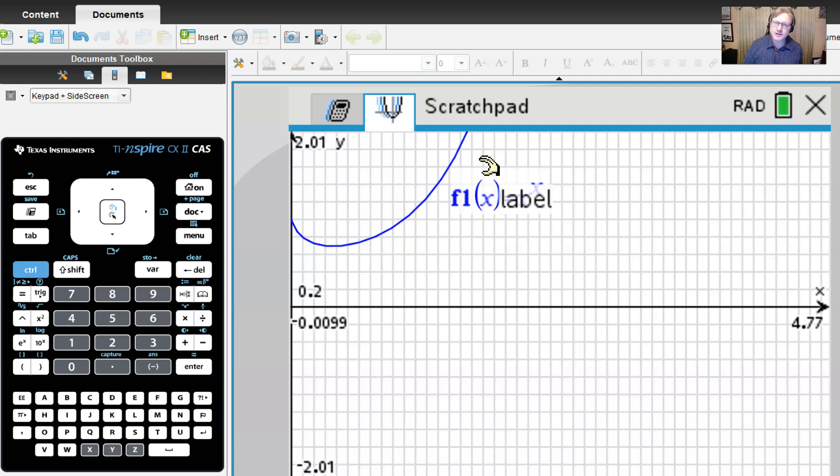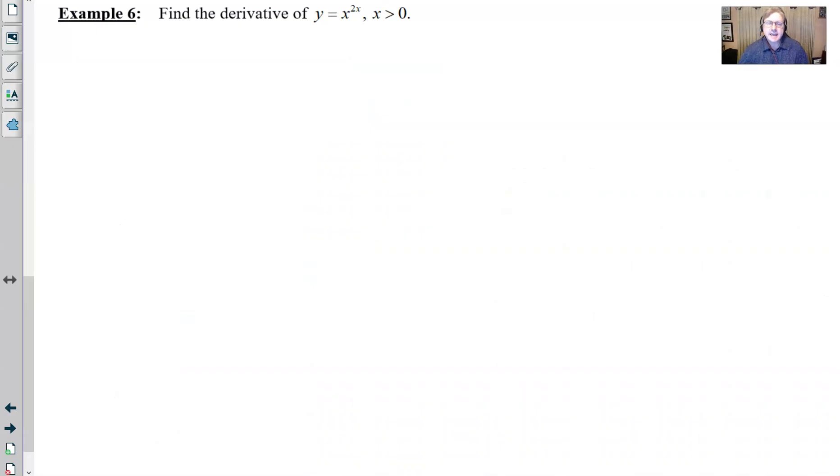Let's go back to our document and run through example six. We're back with our example six, and we have the function y equals x to the 2x for x greater than zero. To take this derivative, we are going to start off with our very important step: taking the natural log of both sides. Remember we do that so that we can perform that wonderful property of logarithms that will allow this exponent 2x to lie in front of the logarithm natural log of x. That's a pretty powerful thing because now we're going to be able to get at that function on the right side and take its derivative.